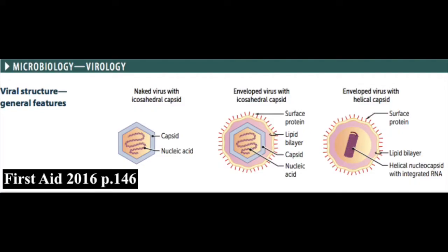In this section we will begin our discussion on viruses, starting with general virology. Let's start with basic viral structure. Viruses can be either naked, meaning no envelope, or enveloped. Naked viruses are composed of an icosahedral nucleocapsid made of glycoproteins and a genome made of nucleic acid inside that nucleocapsid.